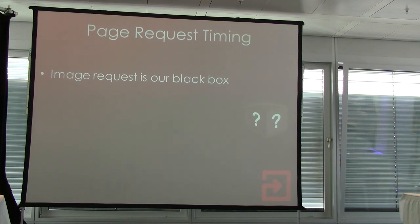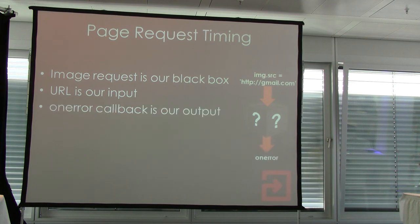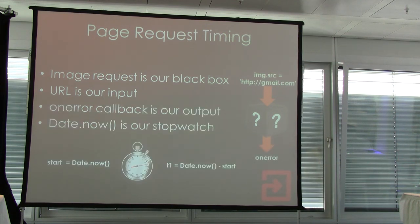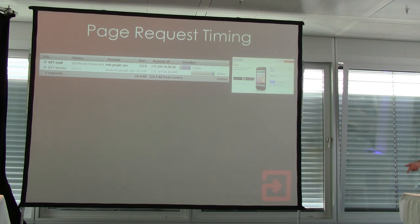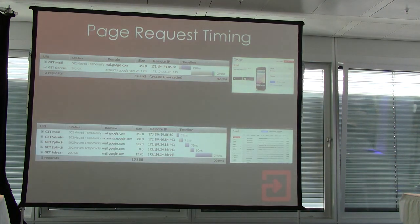Back to the black box idea — in this case the image request is the black box, the URL we put into it is our input, the on-error callback is the output, and we use date.now in JavaScript to time that. So what actually happens when we do this request to Gmail? If you're not logged in, gmail.com will redirect you to the Google Accounts page and the browser will follow those redirects, getting the result and triggering the on-error callback. So if you're not logged in, there are actually two requests the browser has to do. And if you are logged in, Gmail will redirect to Google Accounts, which will say you're logged in and redirect you back — doing a couple more redirects.